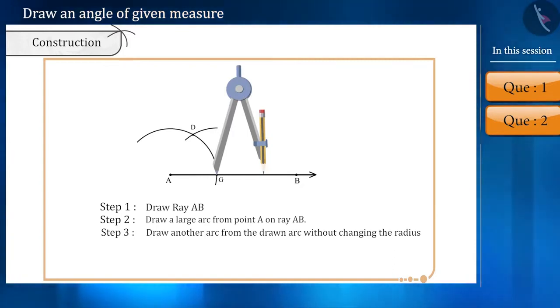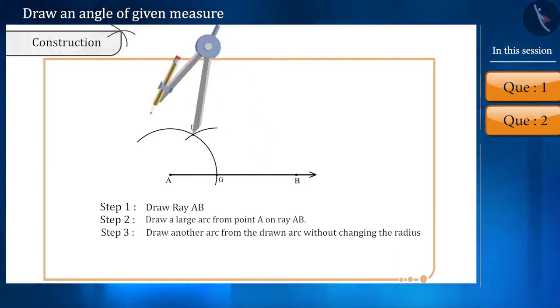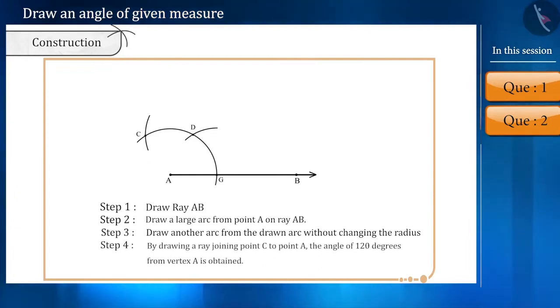Once again, with the same radius and intersecting the larger arc from point D at point C will another arc be drawn. Finally, drawing a ray joining vertex A to point C, an angle of 120 degrees can be obtained.